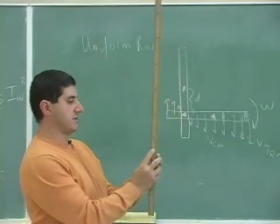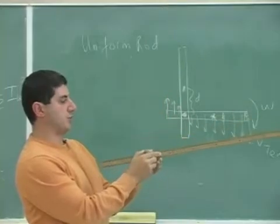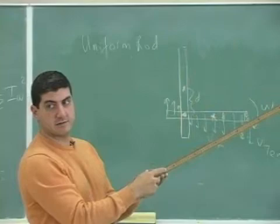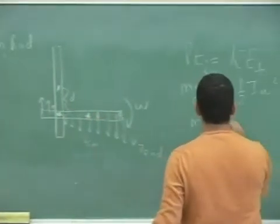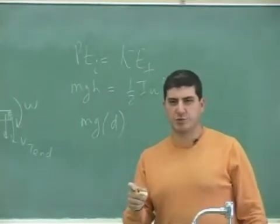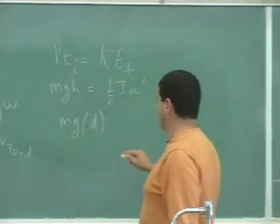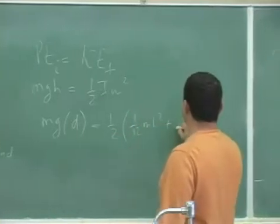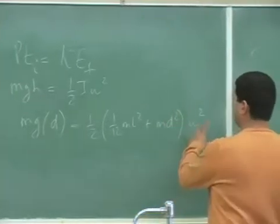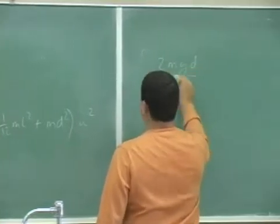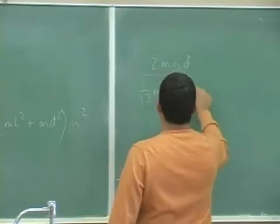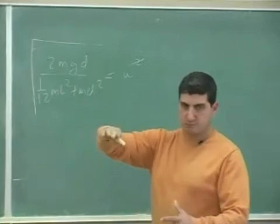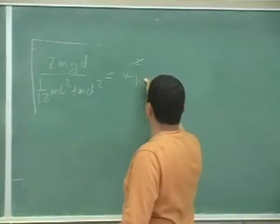What matters is how much did the center of mass of the object fall. Wherever I'm holding it, when I was holding it like this and when it went to this point — where's the center of mass? Right there. Where was the center of mass initially? Right there. The distance from there to there — that's how much the object fell. So this h here is equal to d. So the kinetic energy equation: half I, and the I is the parallel axis theorem — one-twelfth mL squared plus md squared — times omega squared. Then moving to the other side you get 2mgd over that equals omega squared, and then you take the square root to calculate omega of the rod when it's horizontal.